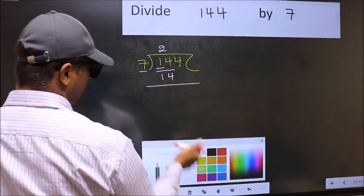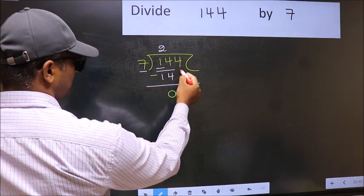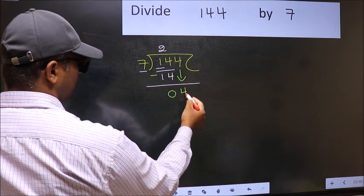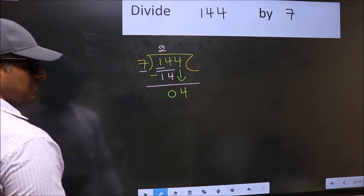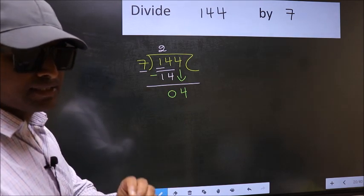Now you should subtract. 14 minus 14, 0. After this, bring down the beside number. So 4 down. After this step, the mistake happens.